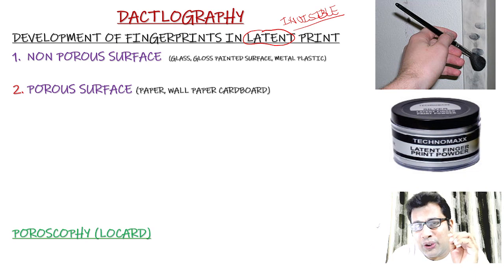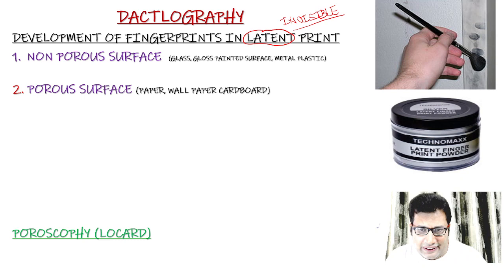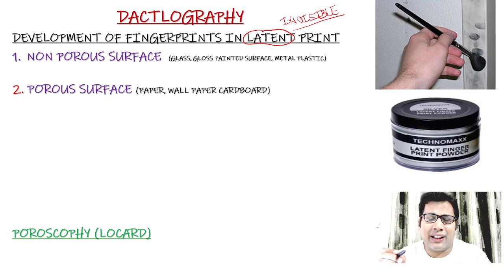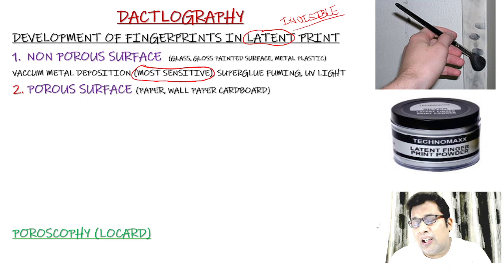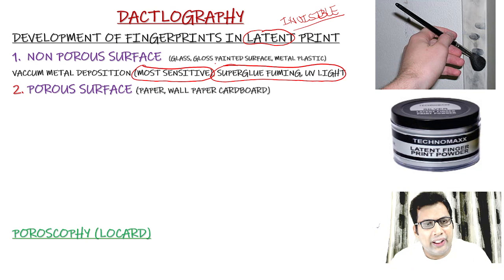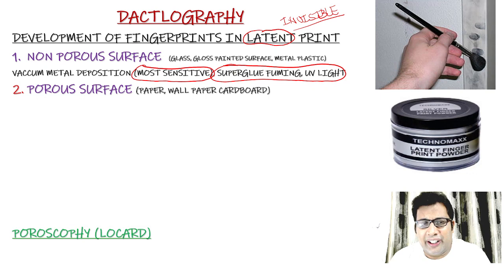What are the substances used in processing or development? In a non-porous surface — like glass, glossy painted surfaces, metals, or plastics — we use certain substances. One is vacuum metal deposition using zinc or gold. This is the most sensitive method. You can also use super glue or UV light on non-porous surfaces.